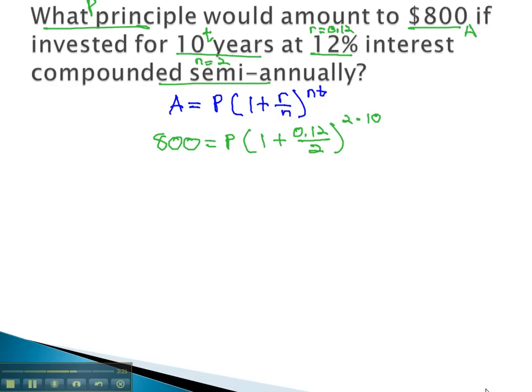Again, depending on your calculator, you'll need to be careful how you enter this in. I'm going to do the exponent and the parentheses in a separate step. 800 equals P times 1.06 to the 20th power. I can now evaluate 1.06 to the 20th power.